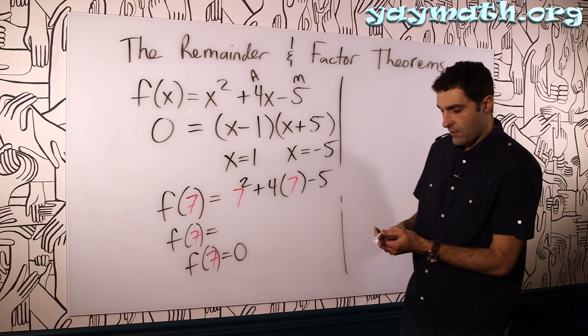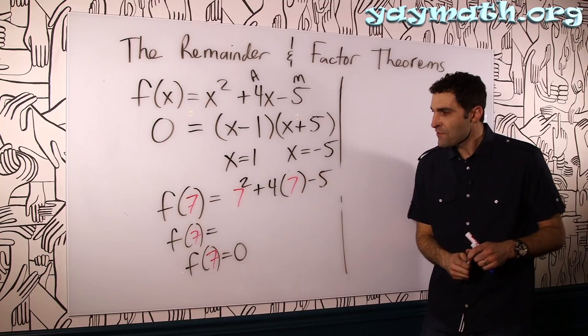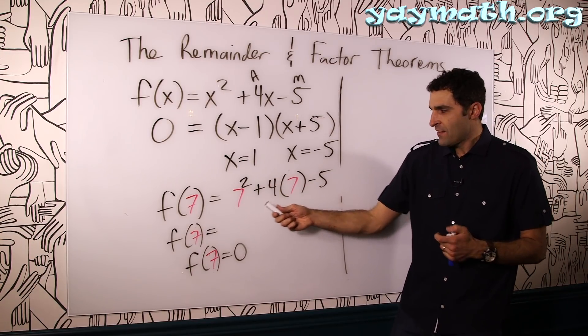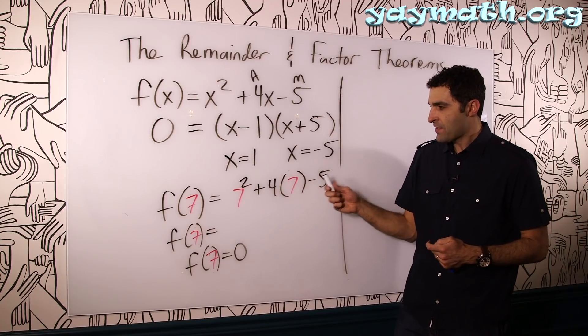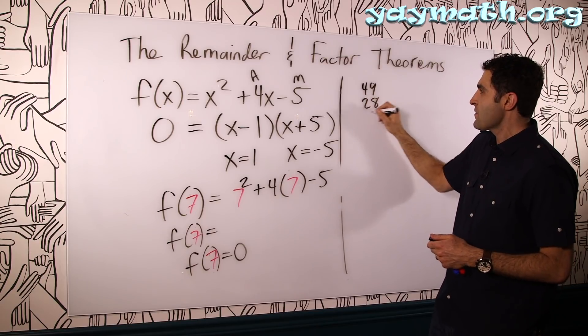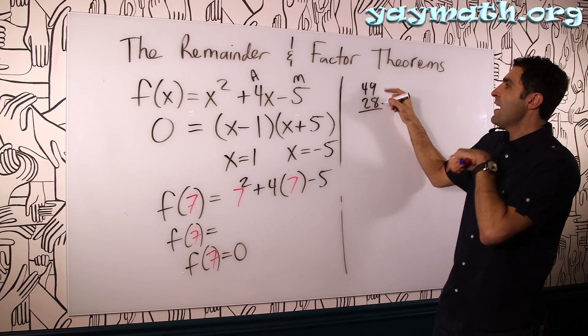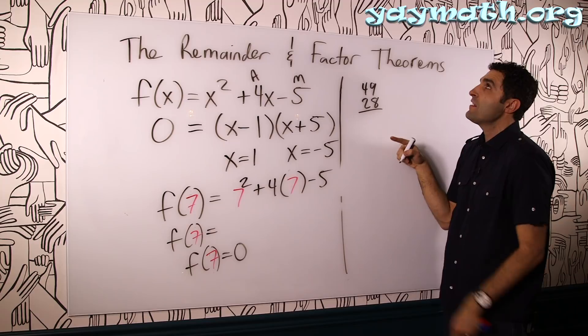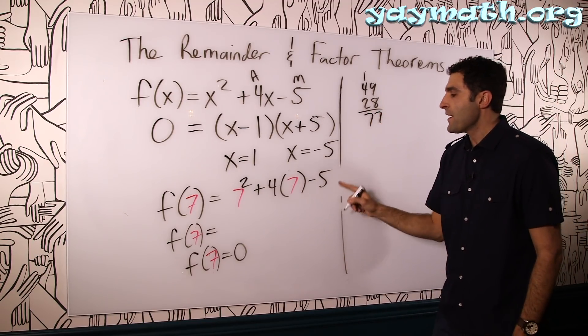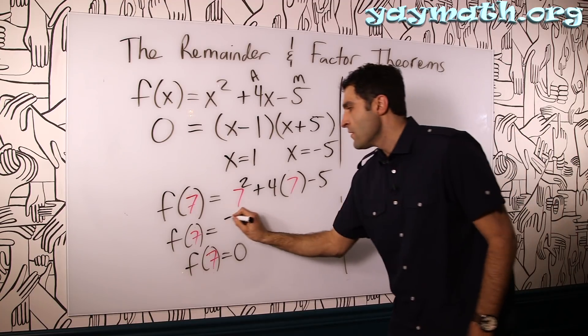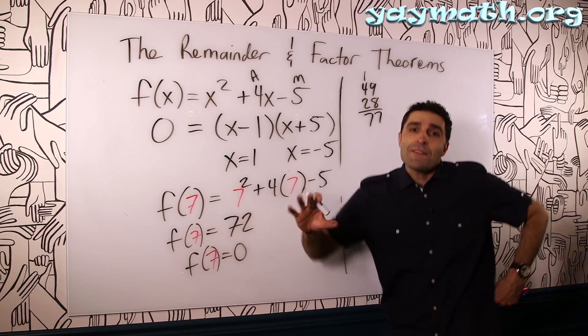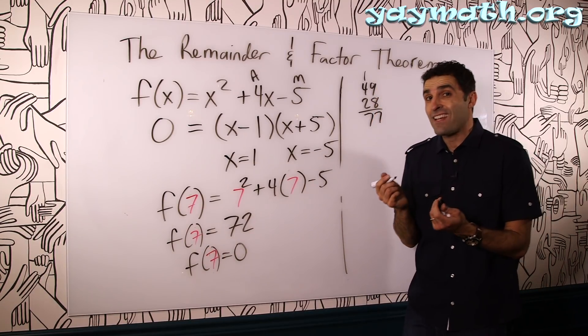This is... Okay. Oh, I got myself in trouble. Here we go. Let's roll up my sleeves if I had any. This is 49 plus 28 minus 5. 49 plus 28. See, I'm not afraid to make mistakes, homeboys and girls. 49 plus 28, that's 60 plus 17 is 77. Yeah. 77 minus 5 is 72. Oh, I wish there was another way to solve for f of 7. Oh, but there is. It's called synthetic substitution.